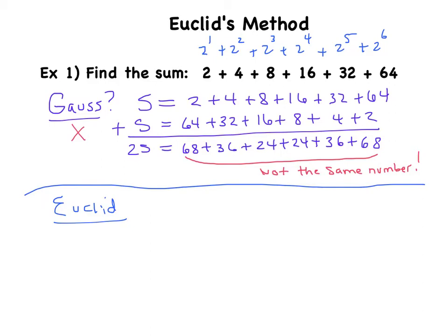What Euclid said was, I'm going to start off by calling the sum S equals 2 to the first plus 2 to the second plus 2 to the third plus 2 to the fourth, and so on. He wrote out all the terms and called it S.